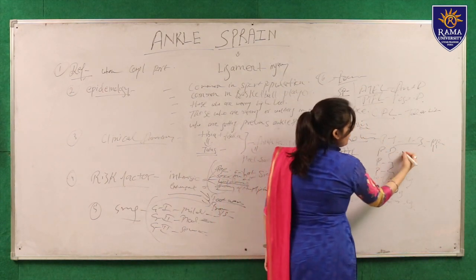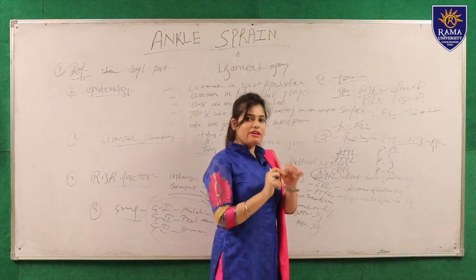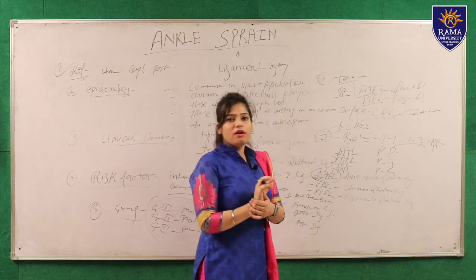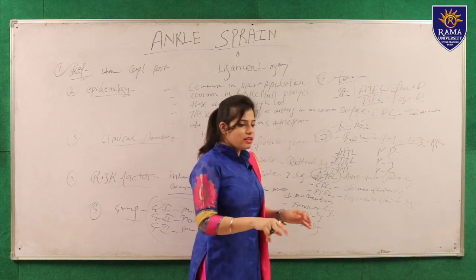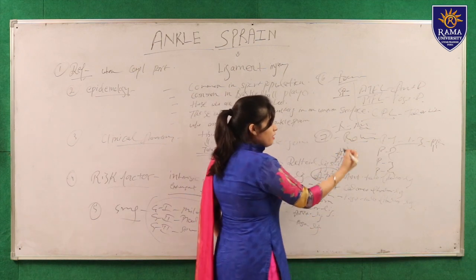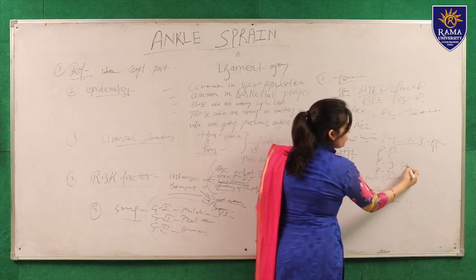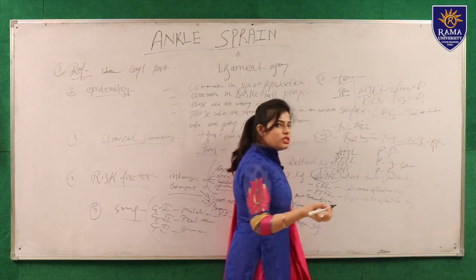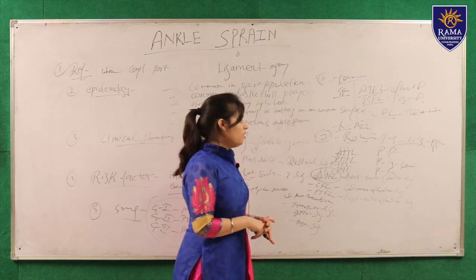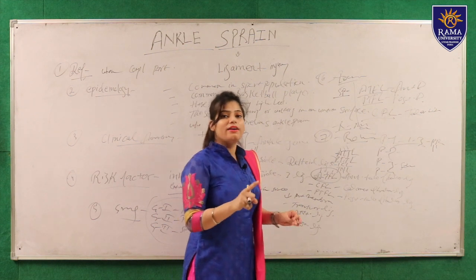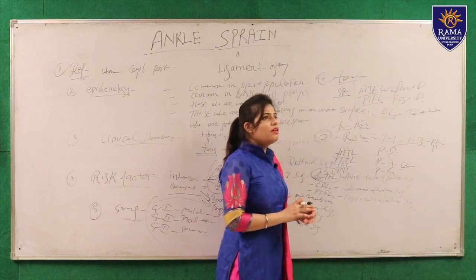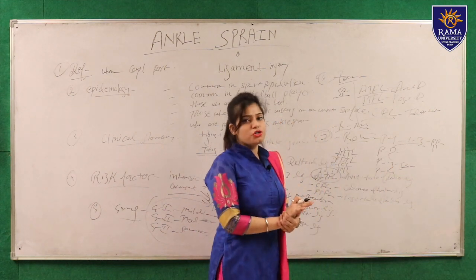In phase two, we perform active and passive movement of the ankle joint, and begin strengthening exercises such as toe curls and alphabet-making exercises. In phase three, we perform strengthening and stretching exercises — stretching for the gastrocnemius and soleus (calf muscles), and also stretching for the tendo Achilles and plantar fascia, along with range of motion exercises.